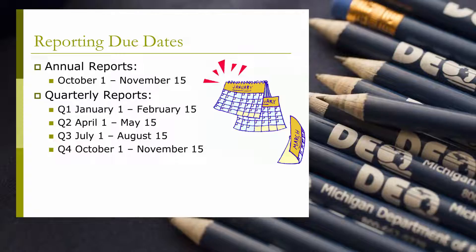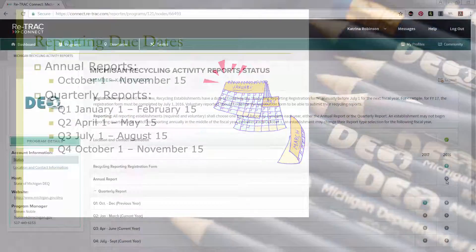April 1st through May 15th for Second Quarter Reports, which covers materials recycled from January 1st to March 31st. July 1st through August 15th for Third Quarter Reports, which covers recycled materials from July 1st through September 30th. For Annual Reports, the reporting period will be October 1st through November 15th of each year and will cover materials recycled from the previous fiscal year.